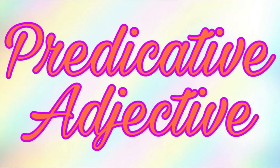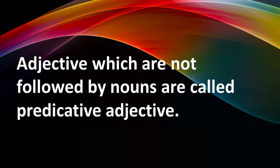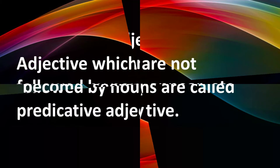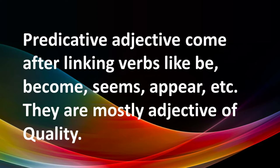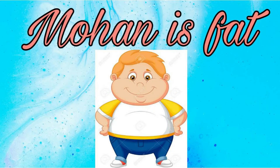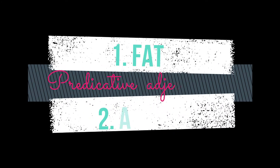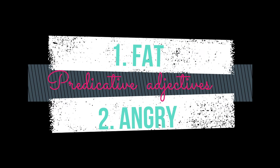What are predicative adjectives? Adjectives which are not followed by nouns are called predicative adjectives. Predicative adjectives come after linking words like be, become, seems, appear, etc. They are mostly adjectives of quality. For example: 'Mohan is fat.' 'Ramesh got angry.' So here, the words fat and angry are not followed by nouns, so these words signify the predicative adjectives.